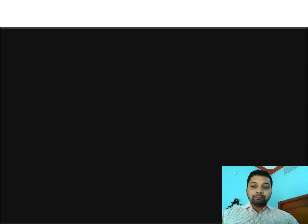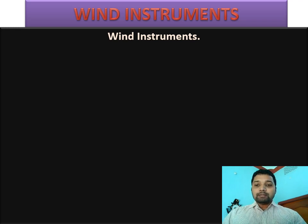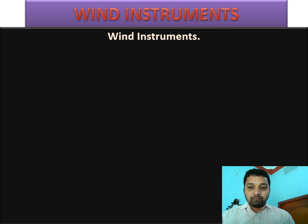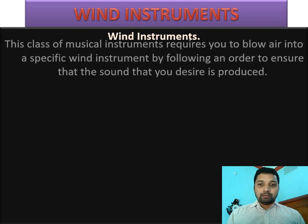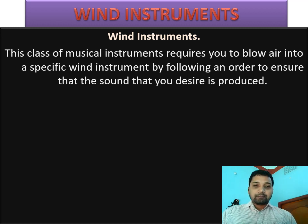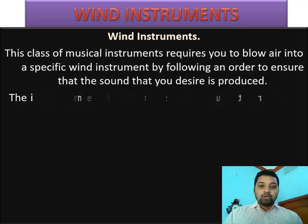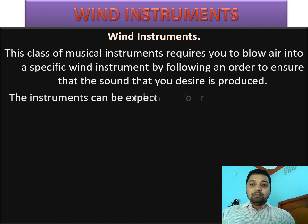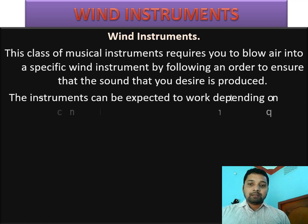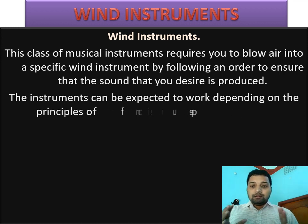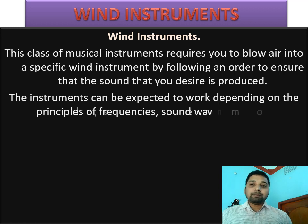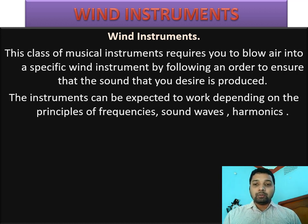The first type is the wind instrument. Wind instrument means the instrument where the air will vibrate. This air is blown inside the musical instrument. When the air blows inside, in a definite order, the sound will come as desired. So in this type of musical instrument, all the air particles vibrate to produce a definite pitch of sound. How this instrument performs depends upon the principle of frequency, sound waves, and harmonics — variation of frequency.